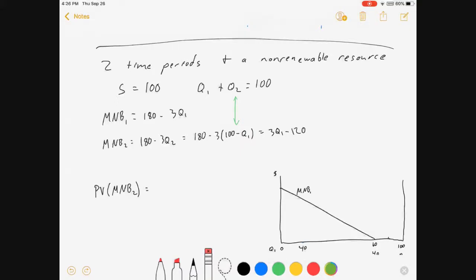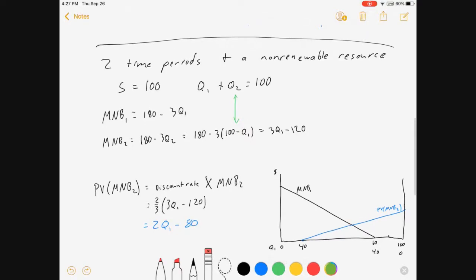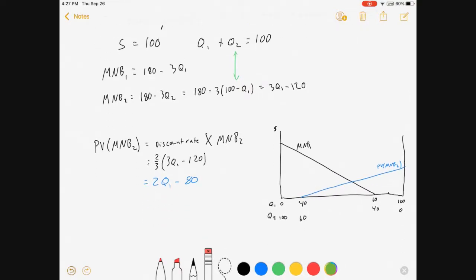But first I'm going to get a present value for marginal net benefit 2, which is the discount rate times the marginal net benefits. So two-thirds times 3Q1 minus 120 is 2Q1 minus 80. So this present value of the marginal net benefits of period 2 is there. Now notice on the horizontal axis I've got Q1 and Q2 moving in opposite directions.